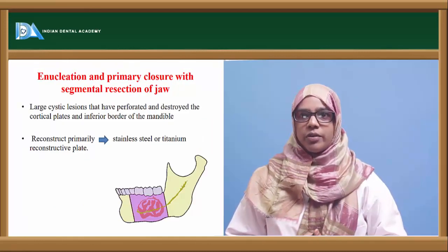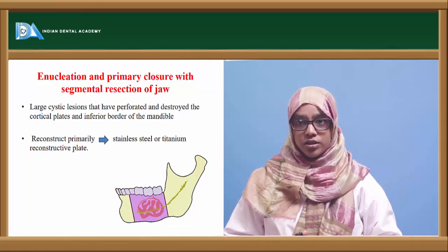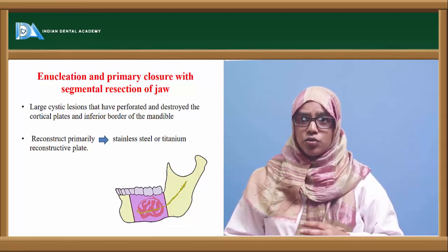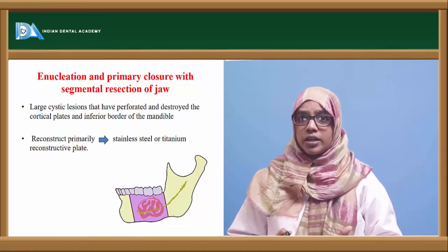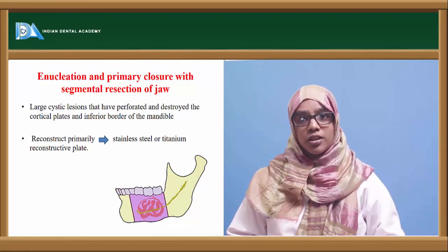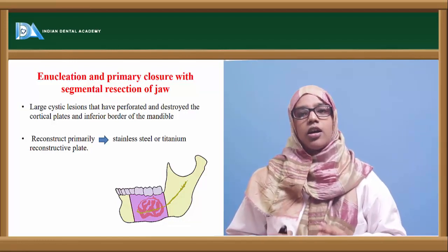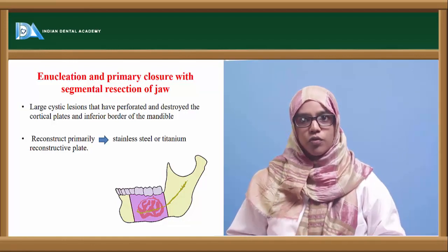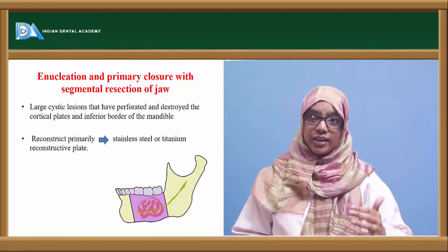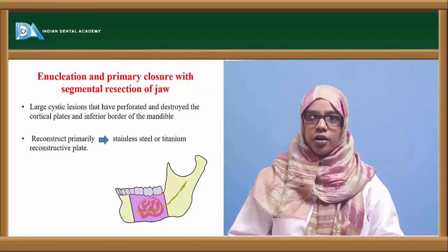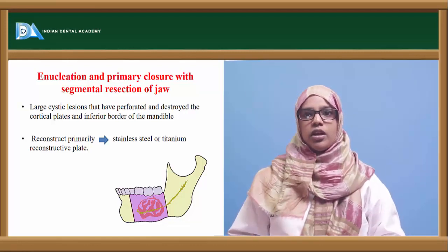Enucleation with primary closure and segmental resection is done for large cystic lesions that have caused perforation and destruction of the cortical plate as well as the inferior border, making it very difficult to maintain continuity of the inferior border. Since the inferior border is so thin that pathological fracture will result, you do a segmental resection, remove the lesion, and place a reconstruction plate. If the cyst has a low recurrence rate, you could do primary grafting with either an iliac crest graft or rib graft, fixed with a reconstruction plate.